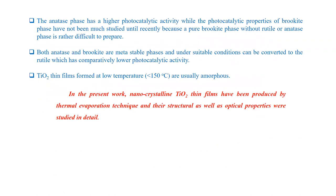The anatase phase has higher photocatalytic activity, while the photocatalytic properties of the brookite phase have not been much studied until recently, because pure brookite phase without rutile or anatase is rather difficult to prepare. Both anatase and brookite are metastable phases and under suitable conditions can be converted to rutile, which has comparatively lower photocatalytic activity.